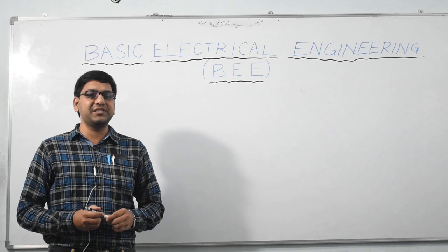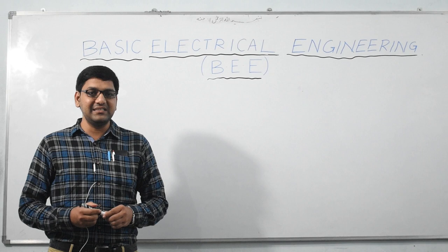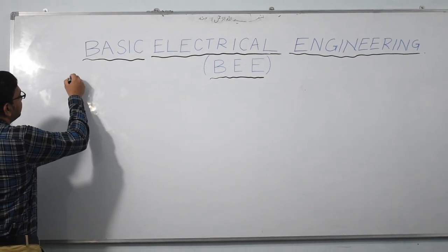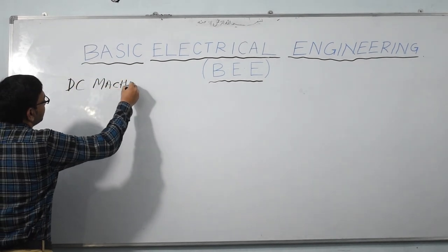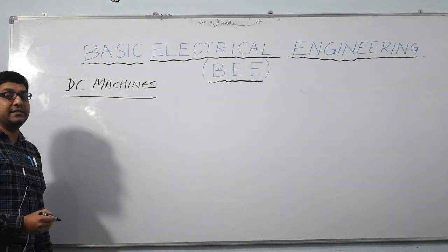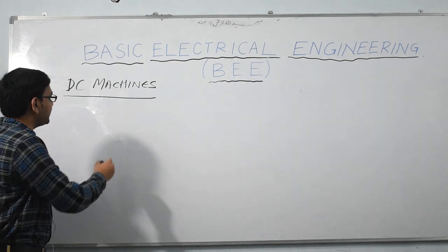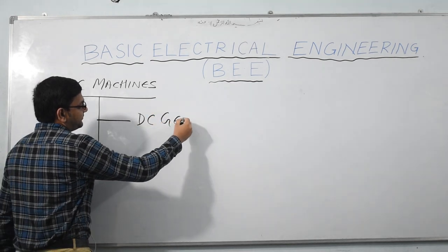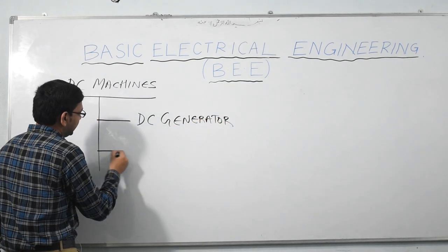In today's lecture, one topic I am going to discuss is DC machines. DC machines are of two types: the first one is the DC generator, and the second one is the DC motor.